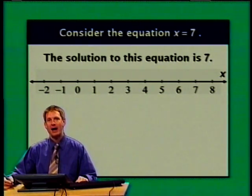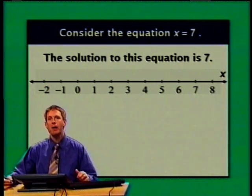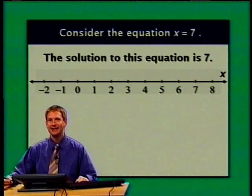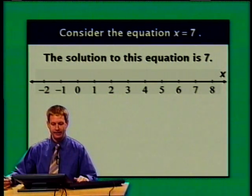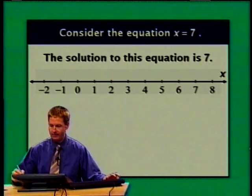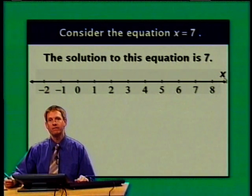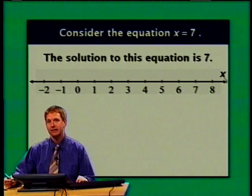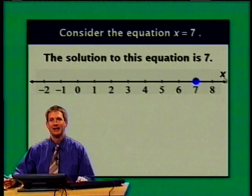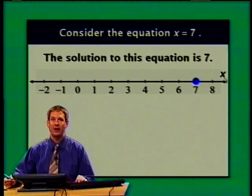So let's talk about how we might graph this solution. I have introduced a number line onto the screen — this is an x number line, which we can see by the letter x in the upper right part of the number line. We're looking for values of x that solve this equation, and we know that number is 7. So I'm going to put a big dot over the point 7, graphically indicating that x equals 7 satisfies this equation.